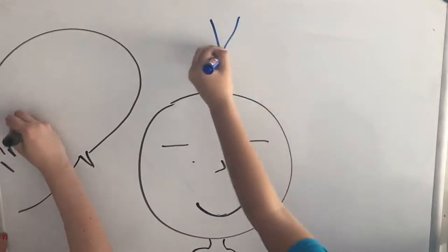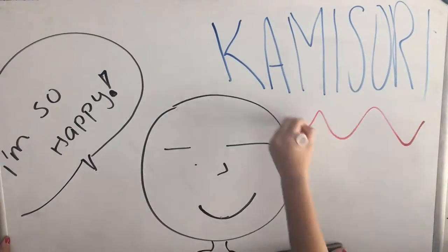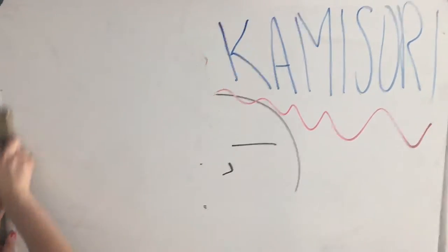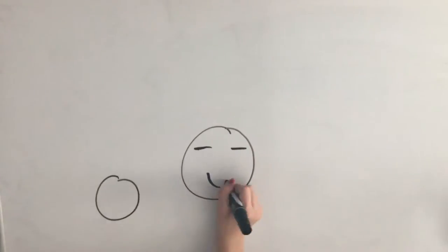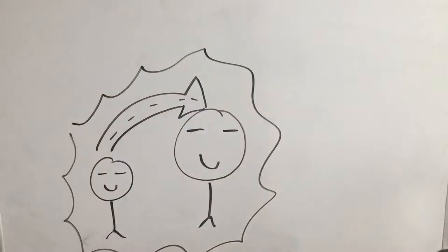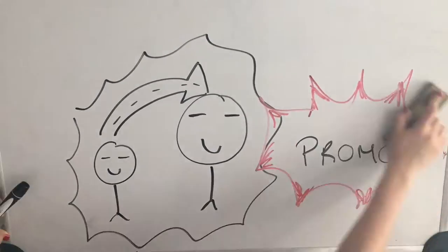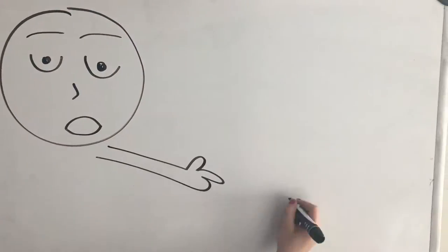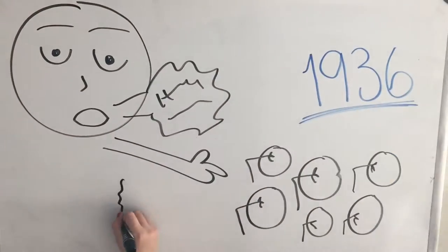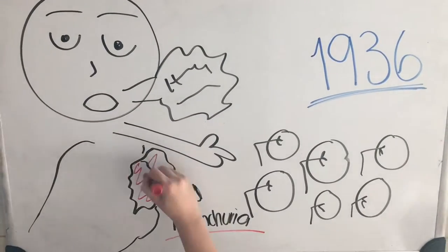Because he was scrupulous and hardworking, Tojo came to be known as Kamisori or in English, the Razor. He was assigned first to the War Ministry and to the General Staff and various command posts. In 1936 Tojo became Chief of Staff of the Kwantung Army in Manchuria.